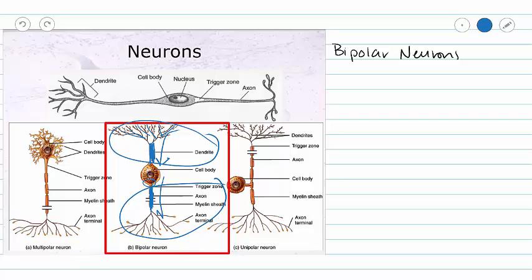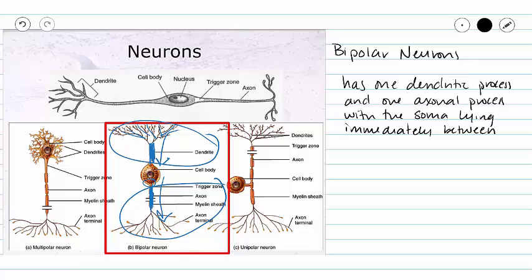Bipolar neurons are not very common in our nervous system. We usually only see them in our olfactory cells, neurons in the retina, and neurons in our ear. You can associate bipolar neurons with our special senses.